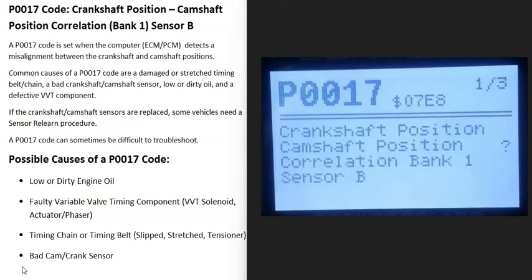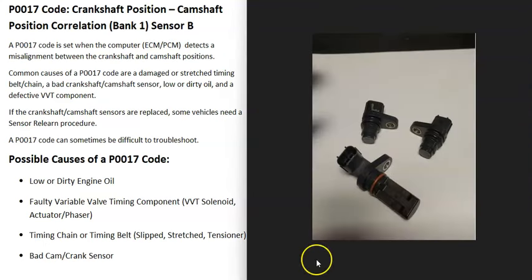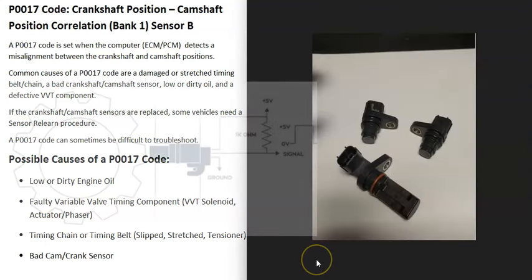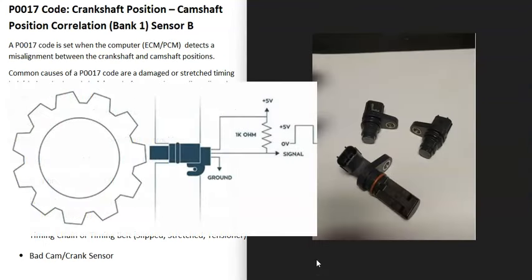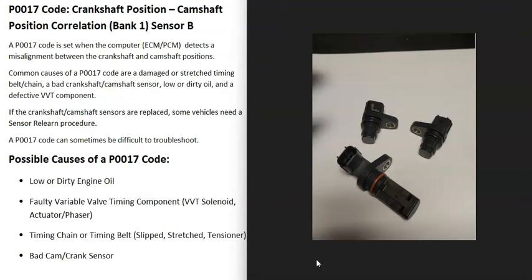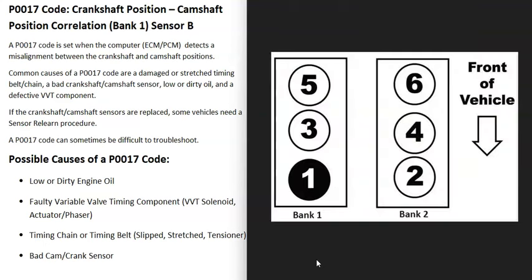Today I'm talking about a P0017 code — what it is and how you go about fixing it. A P0017 code is a crankshaft position/camshaft position correlation, bank one, sensor B. Basically, there are sensors monitoring the crankshaft and the camshaft as they spin, and the computer is seeing that these aren't matching up — there's some kind of timing issue going on, and it needs to be troubleshot.